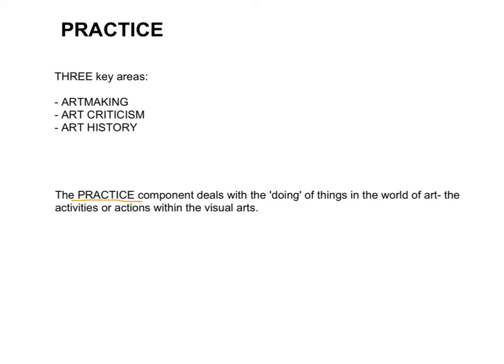Practice can be separated into three key areas: art making, art criticism and art history. In terms of practice as a whole, this particular content area or component deals with the doing of things in the world of art. So it's all about the activities or actions that are happening within the visual arts.